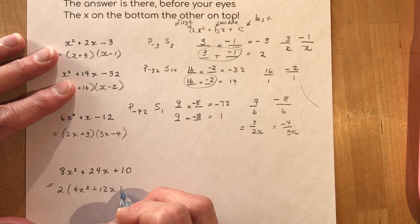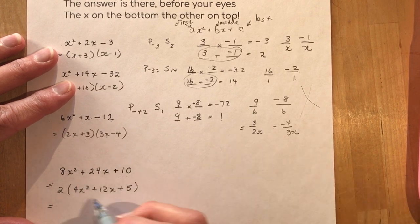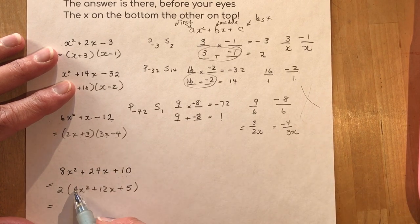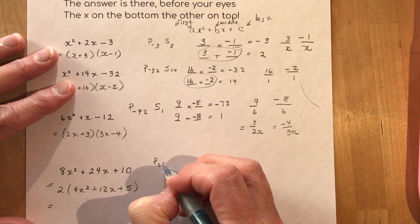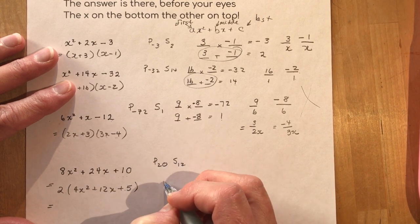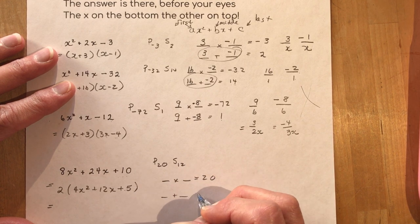Now the two doesn't disappear. It's still there. Leave it there. And now I do all my work on the side. Don't put it under here. I'm looking for a product of 4 times 5, product of 20, and a sum of 12. What two numbers multiply to give me 20 but add to give me 12?